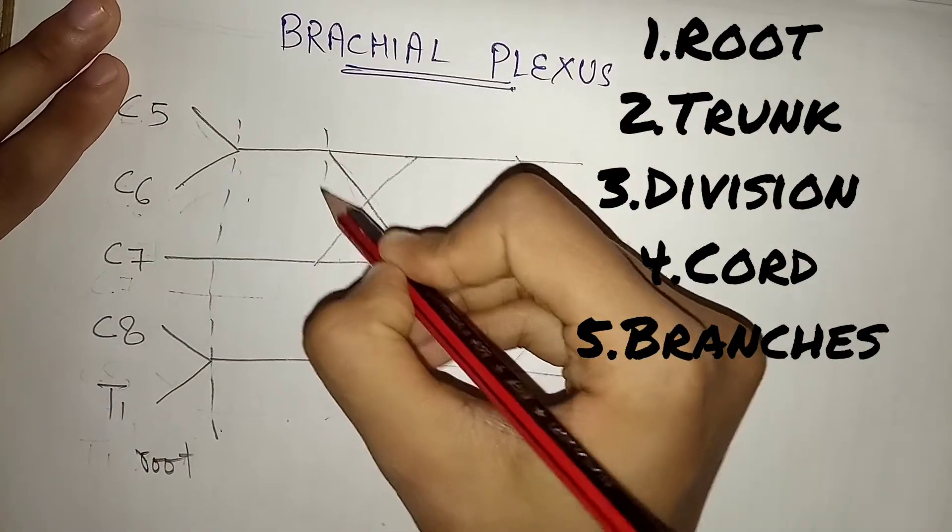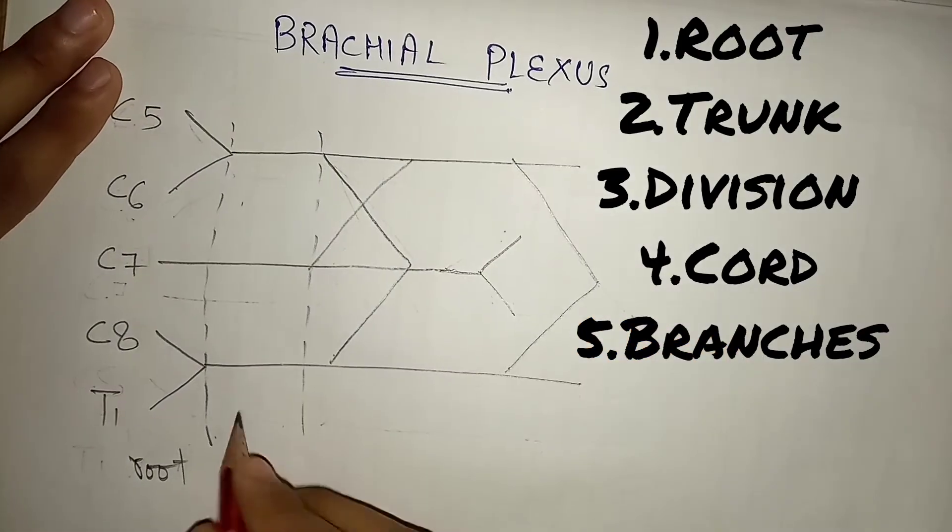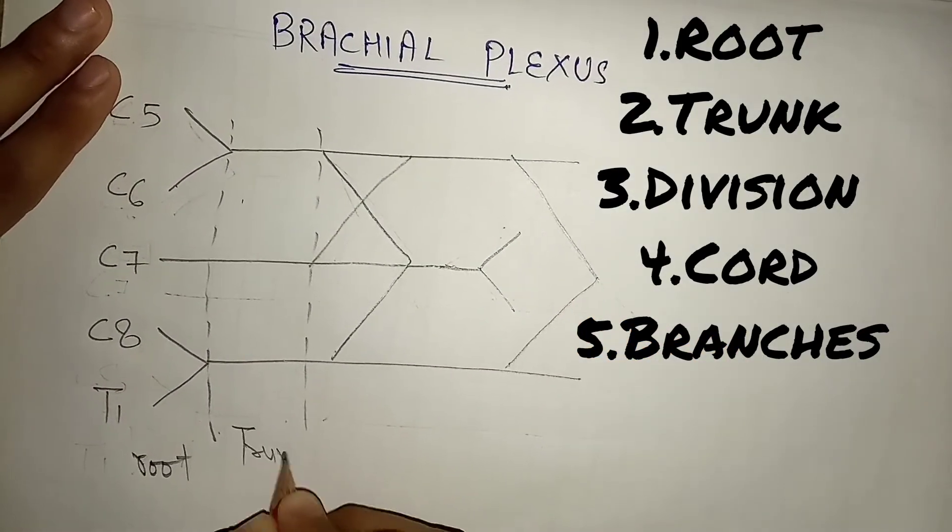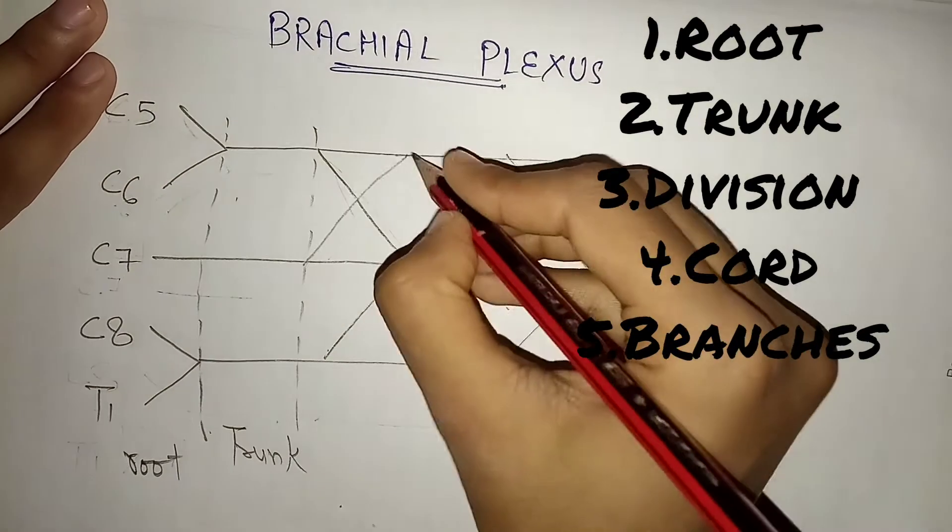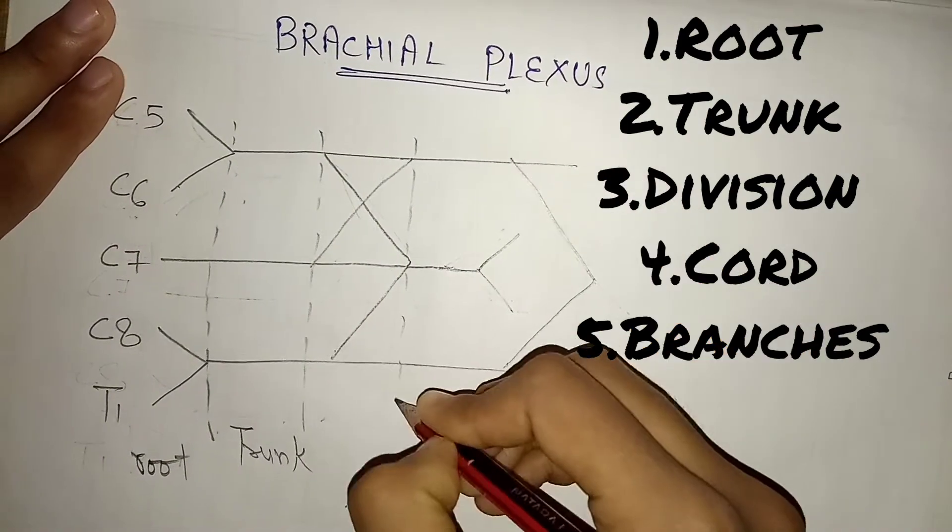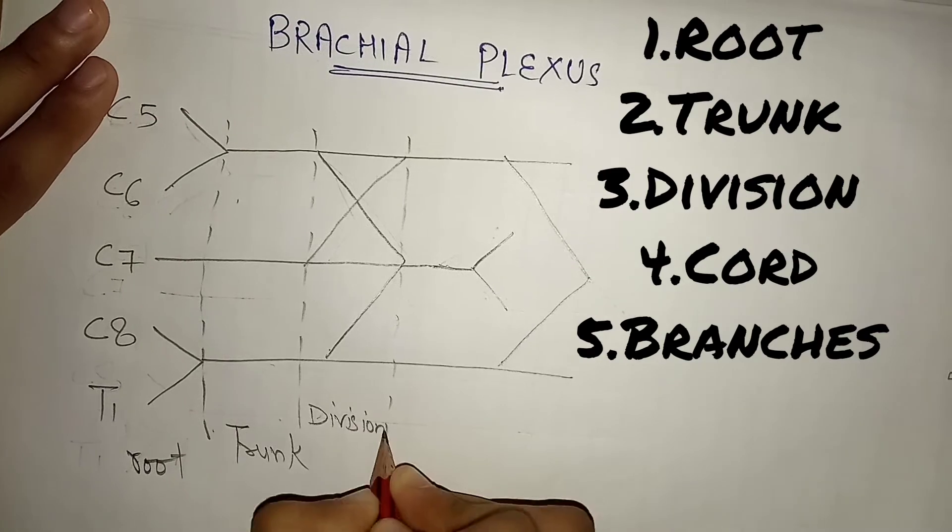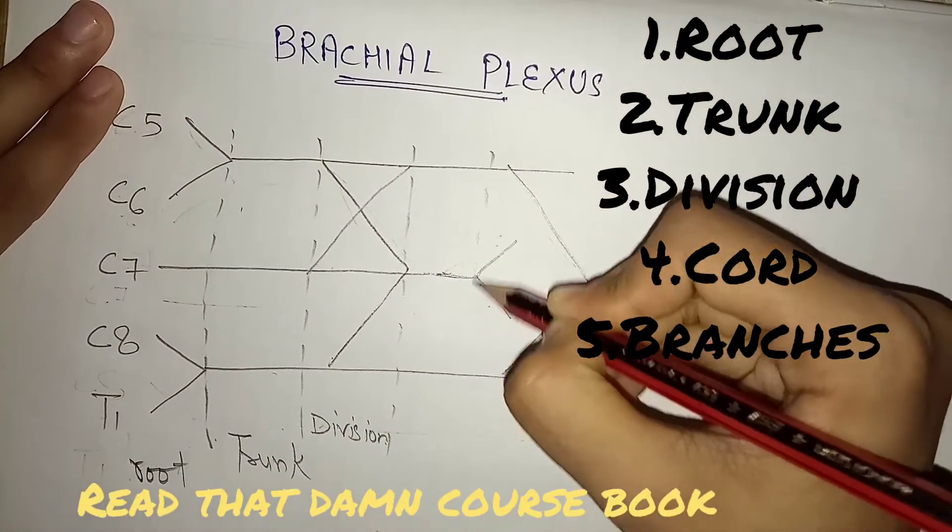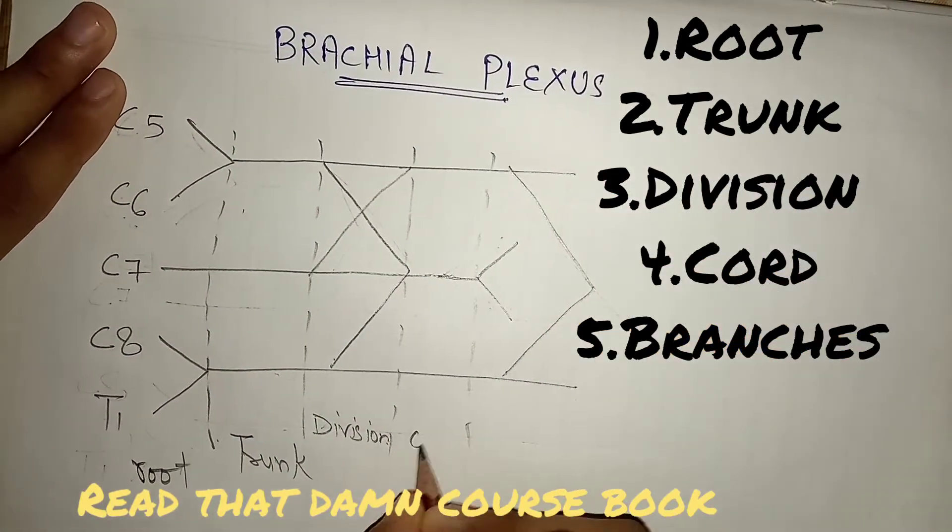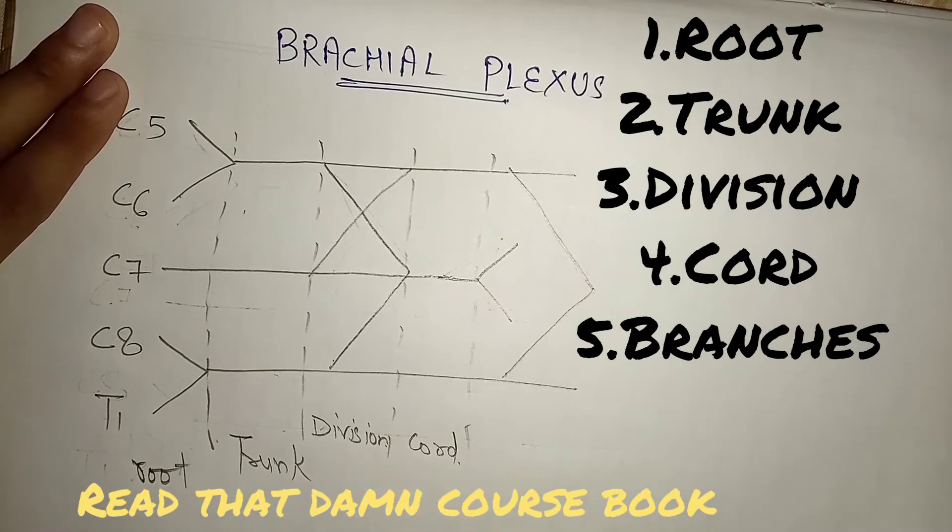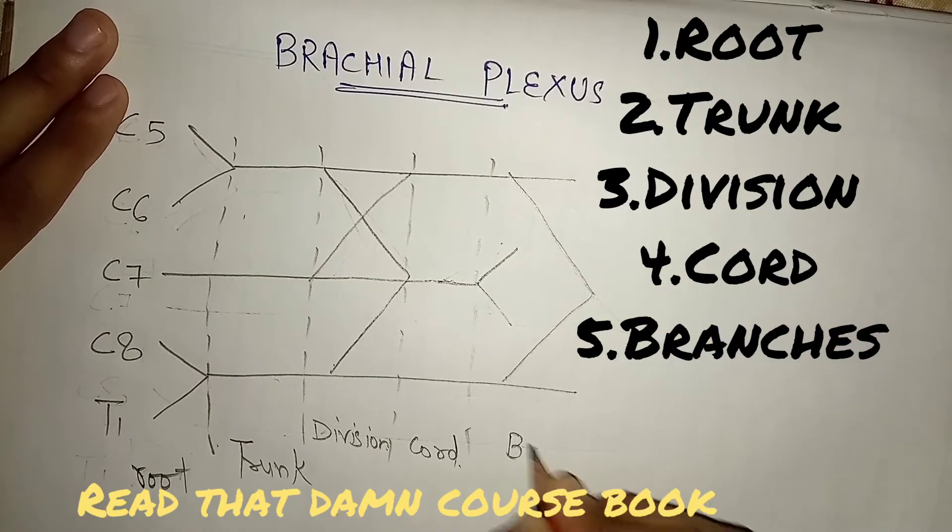The first is root, then we have trunk, then we have division, chords, and branches. So there is a mnemonic to learn root, trunk, division, chords, and branches: read that damn course book.